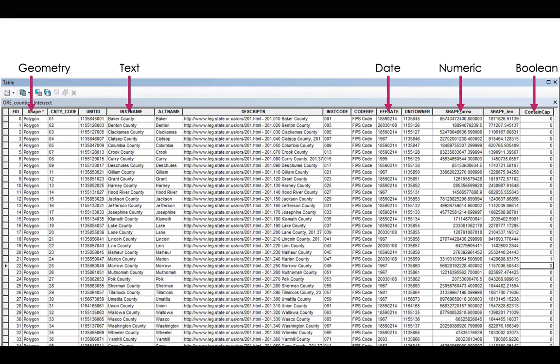Here's an example data set where I've noted the different types of attributes that we have here. You can tell that these are all polygons. We have text attributes such as the name or alternate name. We have the date in which they came into existence. We have numeric attributes such as the shape area or the shape length. And we have a Boolean attribute, which is whether these counties in Oregon contain the capital.